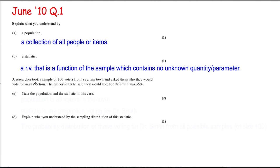Next part, a researcher took a sample of 100 voters from a certain town and asked them who they would vote for in an election. The proportion who said they would vote for Dr. Smith was 35%. We're asked to state the population and the statistic in this case. Well the population is a collection of all the voters in the town, and the statistic is the proportion that vote for Dr. Smith.